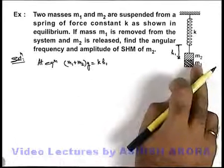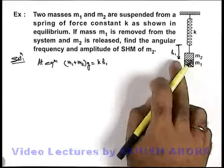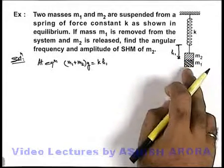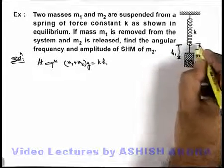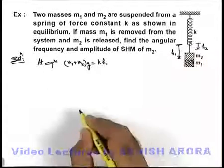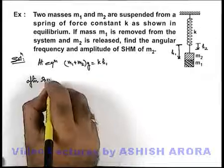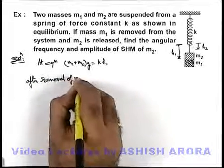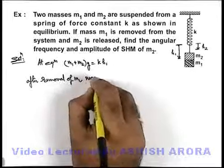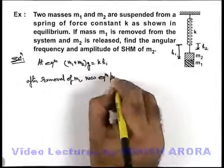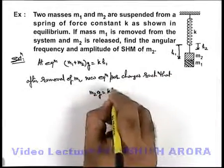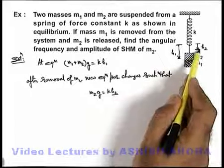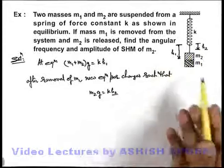Now if m1 is removed, the new equilibrium position will no longer be the same because the overall weight is reduced. The equilibrium position for m2 would be at a higher position where the extension of spring would be h2. After removal of m1, the new equilibrium position changes such that m2g equals kh2, where h2 is the distance of new equilibrium position from the natural length of spring.